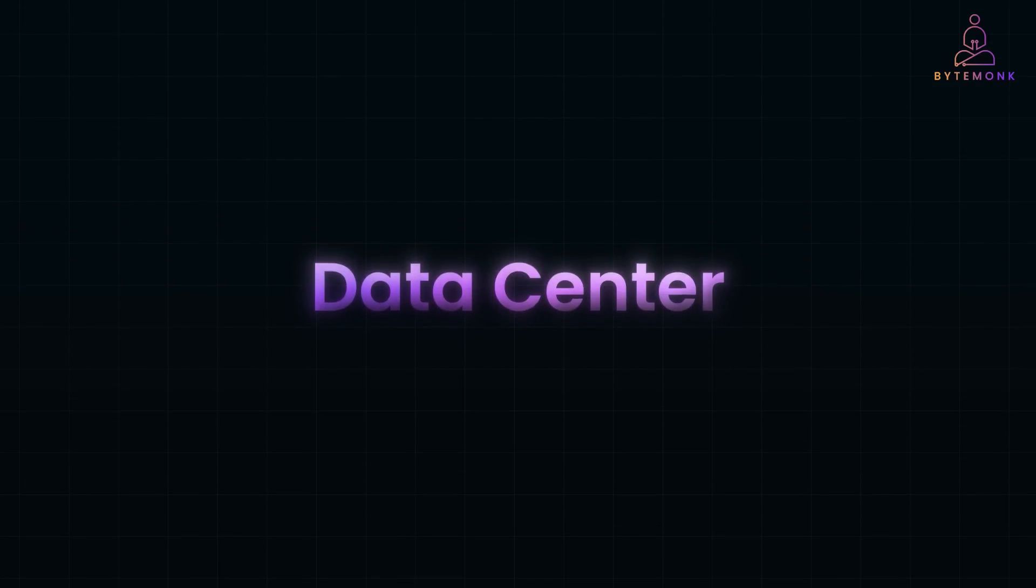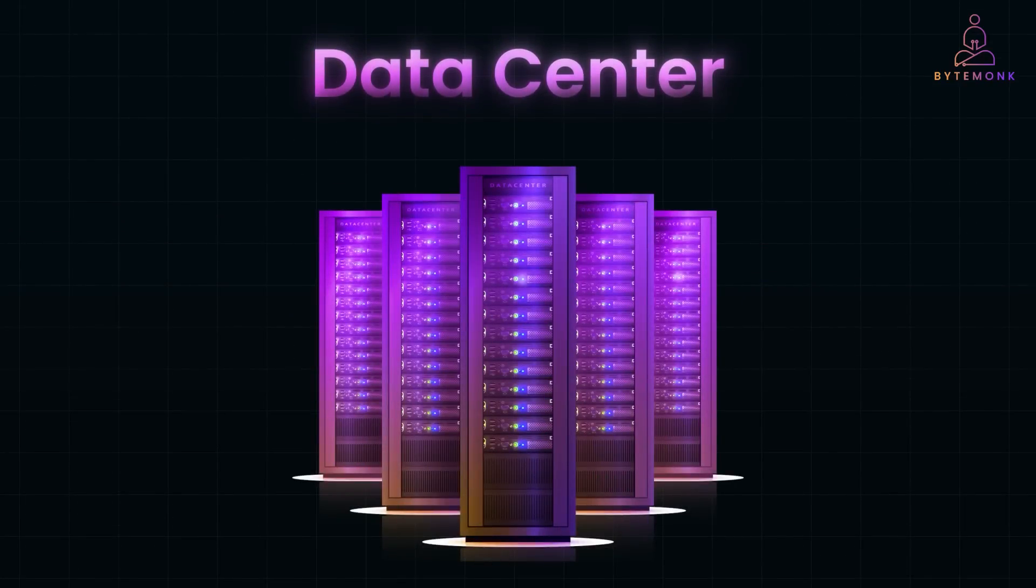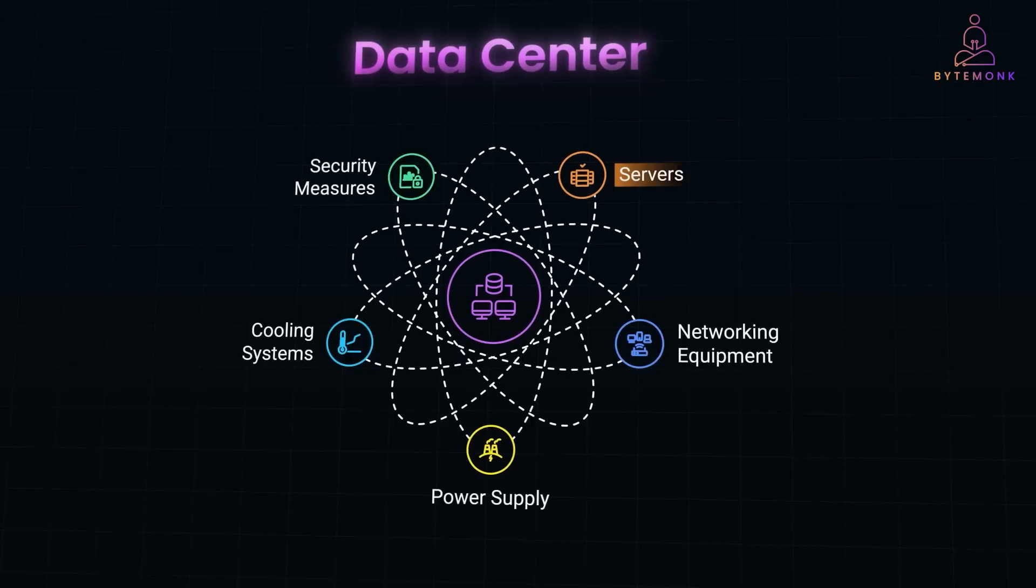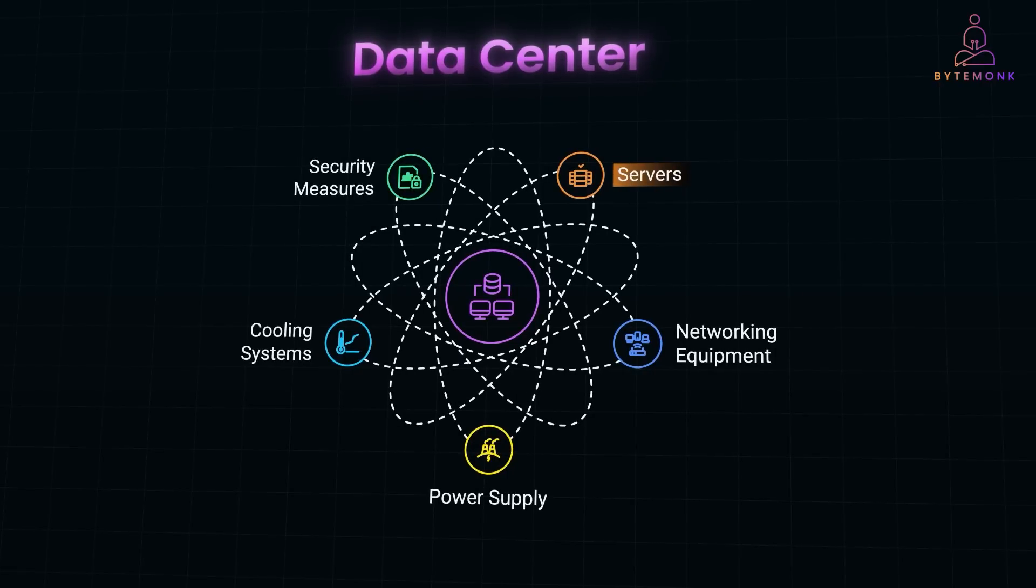A data center is a massive facility filled with thousands of servers that store and process data for websites, applications, and services. So instead of businesses setting up their own infrastructure, they often rent space in a data center or use cloud providers that own these data centers. So what's inside a data center? There are servers, the physical computers that store and process data. We got networking equipment like routers, switches, and fiber optic connections to ensure fast communication between servers and the internet.